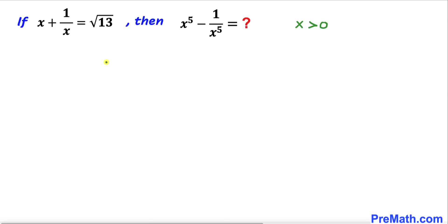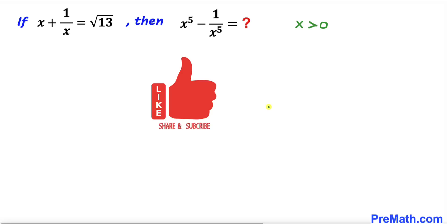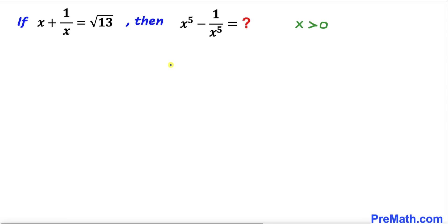Welcome to pre-math. In this video we have x plus 1 over x equal to square root of 13, and we are going to find the value of x power 5 minus 1 divided by x power 5. Make sure that x is not equal to 0. Please don't forget to give a thumbs up and subscribe. Let's go ahead and get started with the solution.